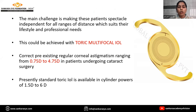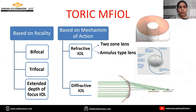A toric multifocal IOL will correct pre-existing regular corneal astigmatism ranging from 0.75 to 4.75 diopters in patients undergoing cataract surgery. The standard toric IOL is available in cylinder powers of 1.5 to 6 diopters. Based on focality, they can be either bifocal, trifocal, or extended depth of focus IOL. Based on the mechanism of action, they can be refractive or diffractive IOL. Nowadays, diffractive IOL is most commonly used.